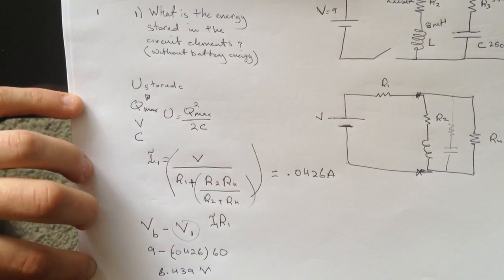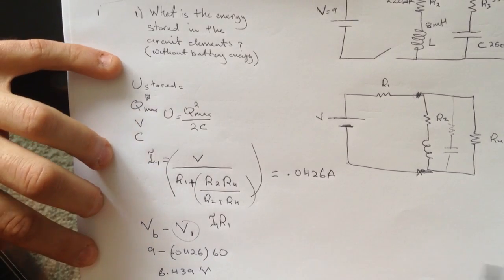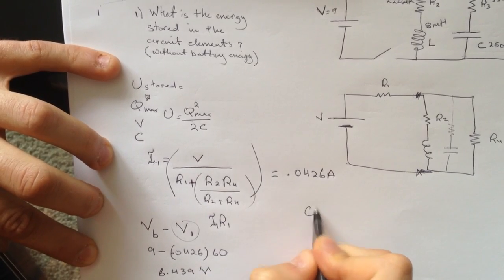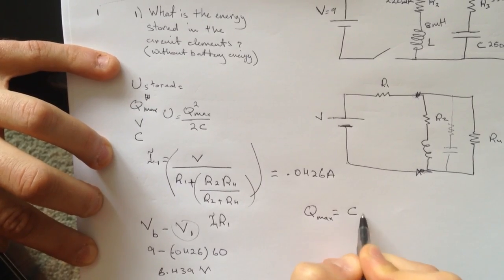So this is the voltage across here, which is the same as the voltage as where the capacitor is. Since this is the voltage, then the Q max is equal to CV.